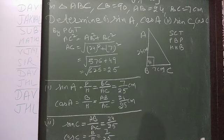Sin A is perpendicular upon hypotenuse, BC upon AC, which is 7 upon 25. Now cos A, again AB is base, BC is perpendicular, AC is hypotenuse. Cos A is base upon hypotenuse, AB upon AC, which is 24 upon 25.